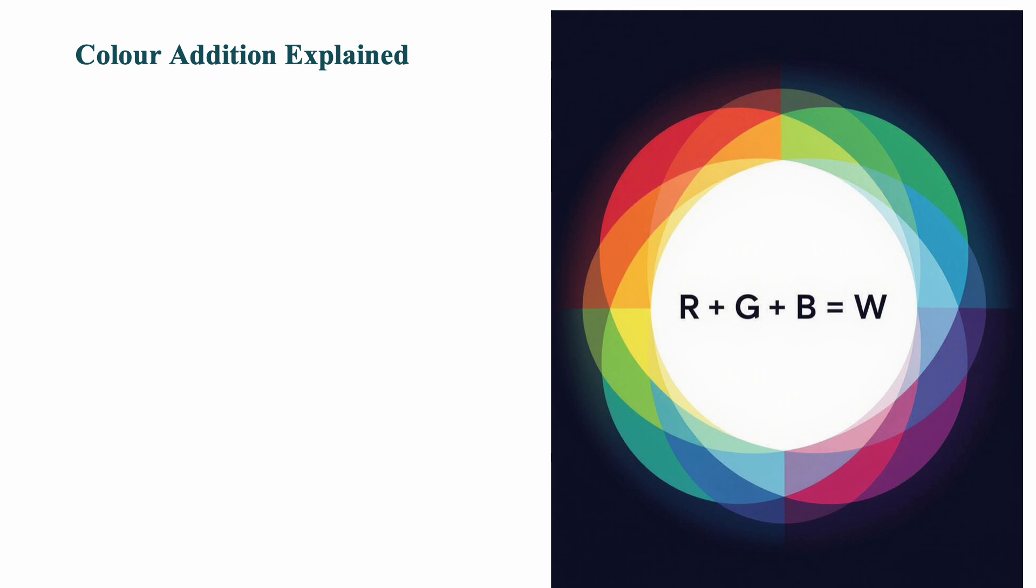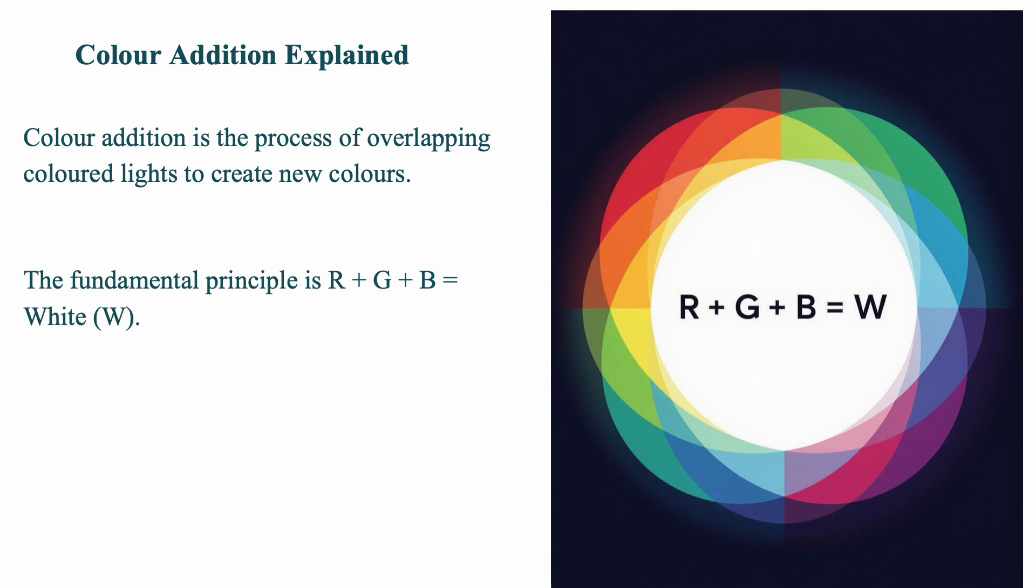Color addition is when different colored lights overlap to create new colors. The fundamental rule is that red plus green plus blue equals white. This additive process is central to how we perceive colors on digital screens. Every pixel in your phone or computer screen uses this principle to display color images.